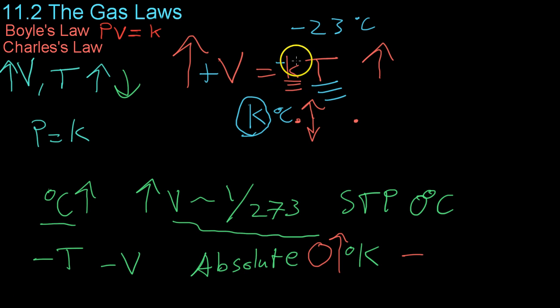As you can see, there is a conversion constant involved within Charles's law, that is the K, just like there is in Boyle's law. So we can say that this constant, after doing some algebra, is V over T.